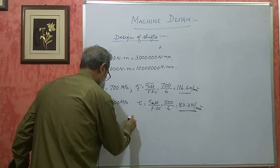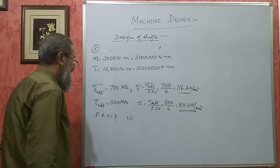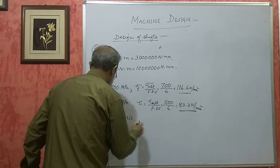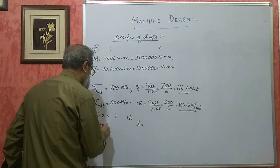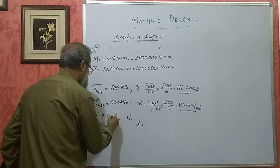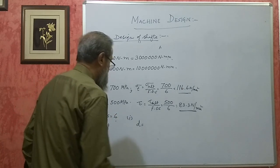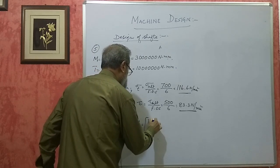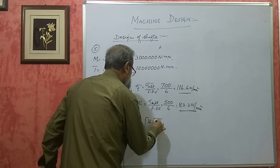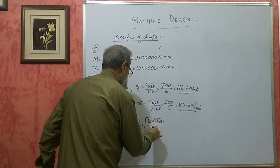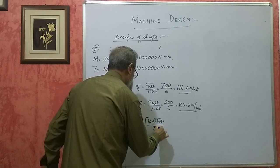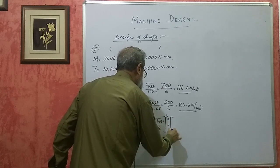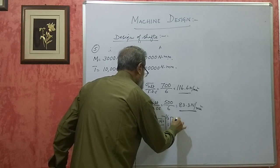First, on the basis of maximum shear stress theory, D = (16 × √(T² + M²) / (π × τ))^(1/3).